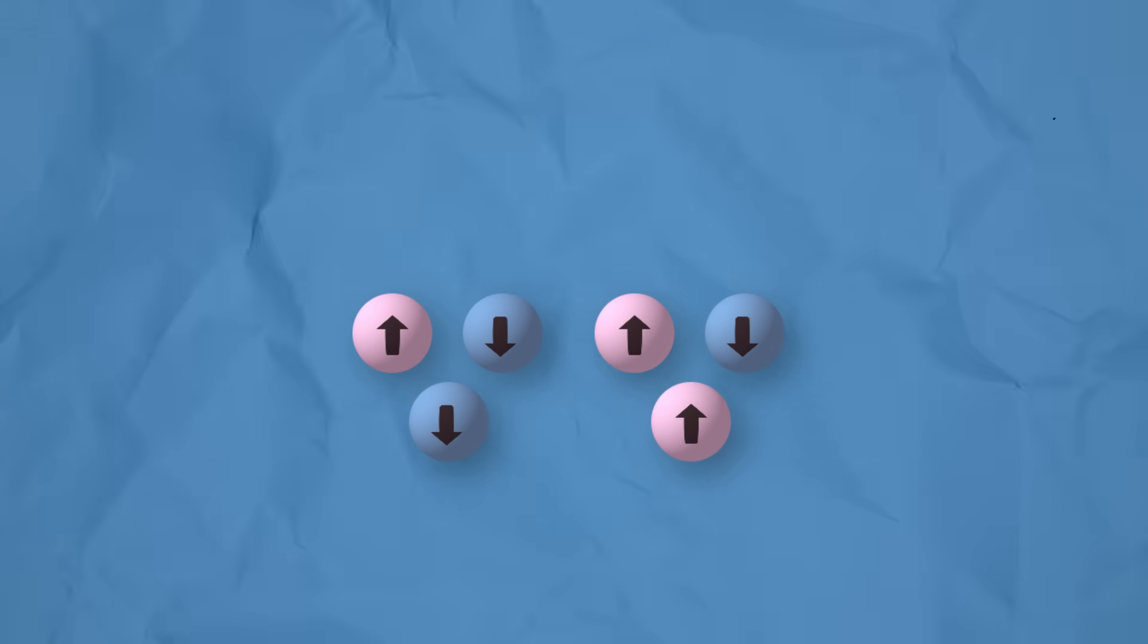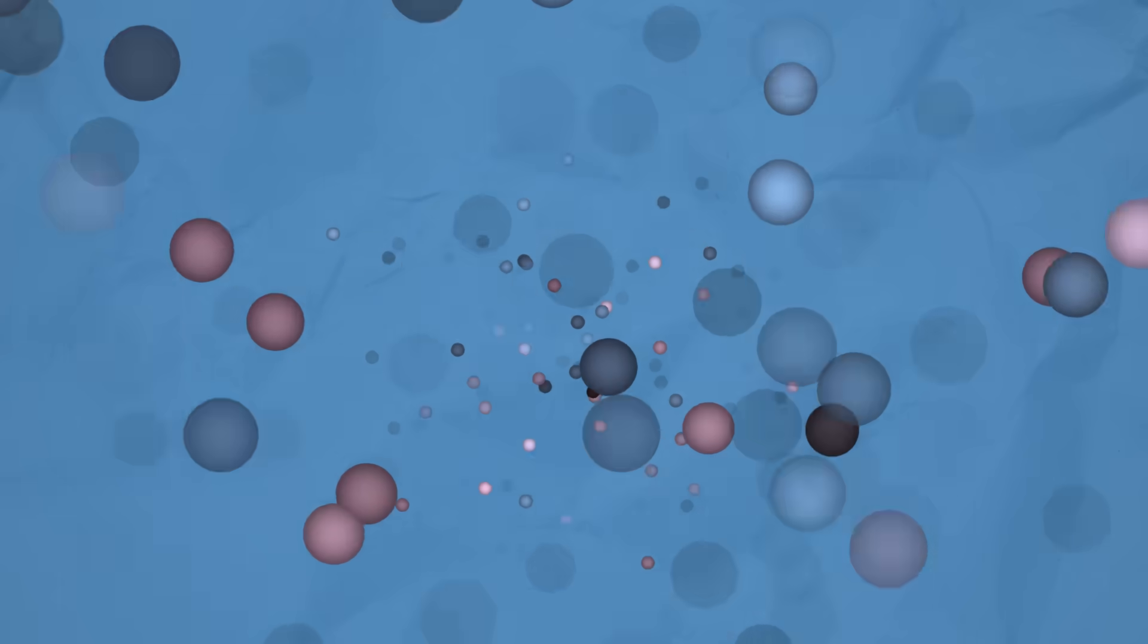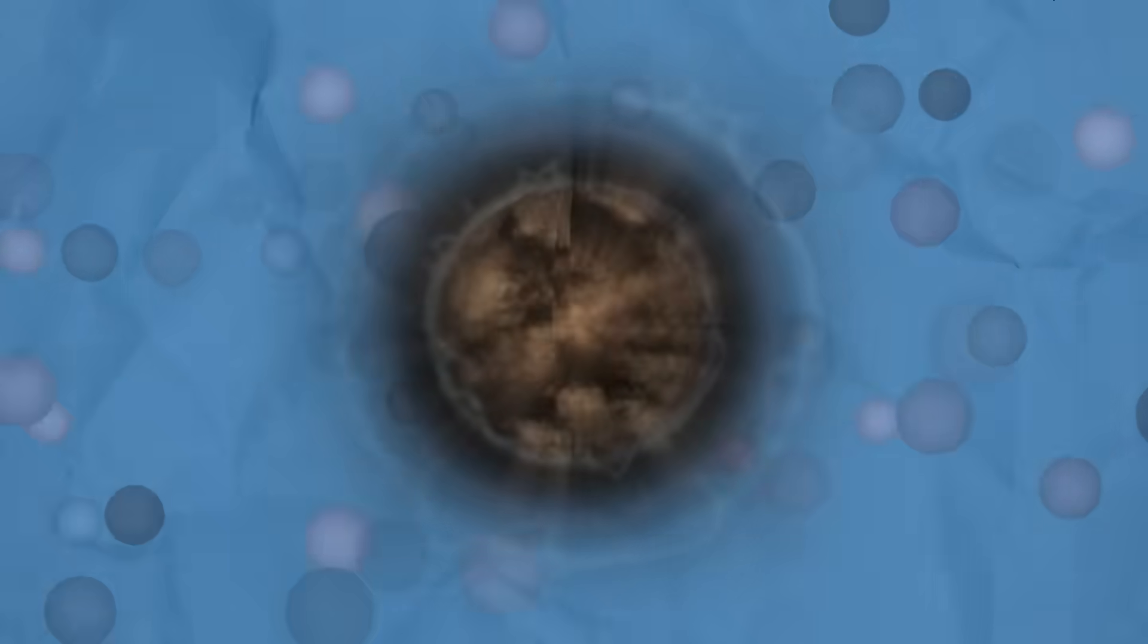This would result in a kind of free flowing soup known as up-down quark matter, and could possibly only exist under the colossal pressure of a supernova or the famously dense neutron star.